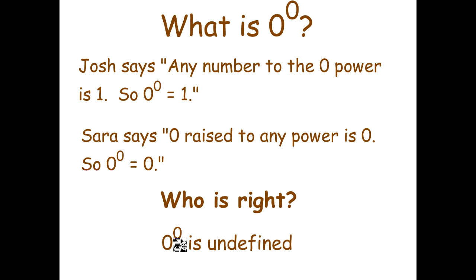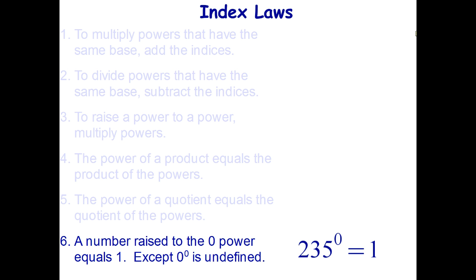Zero cannot be raised to the zero power in mathematics. Now in some higher mathematics — past university level — mathematicians sometimes find it useful to define it as one or as zero depending on the context, but in general zero to the zero power is undefined. So if that question appears on an exam, just write 'undefined.' Index Law 6: a number raised to the zero power equals one, except zero to the zero is undefined. For example, 235 to the zero power equals one. Copy that down and let's solve some questions.